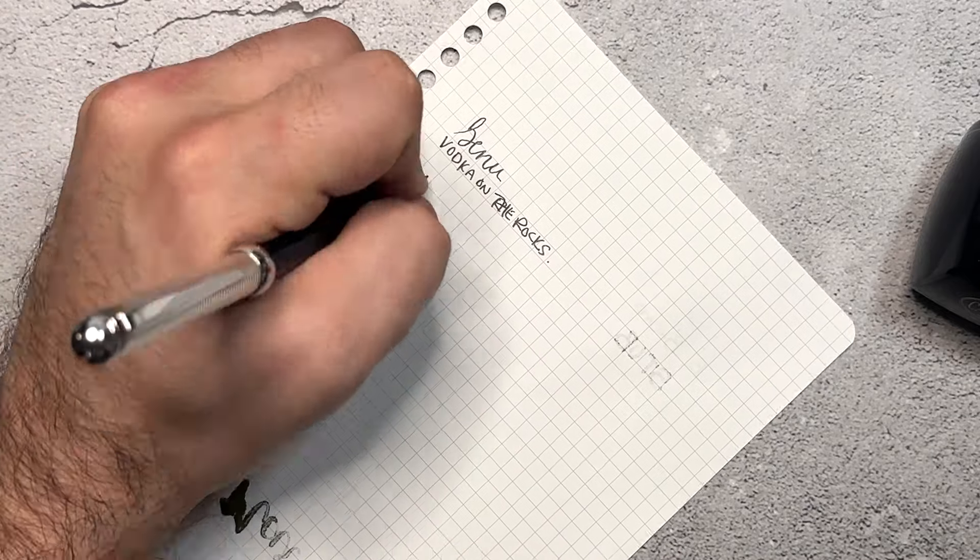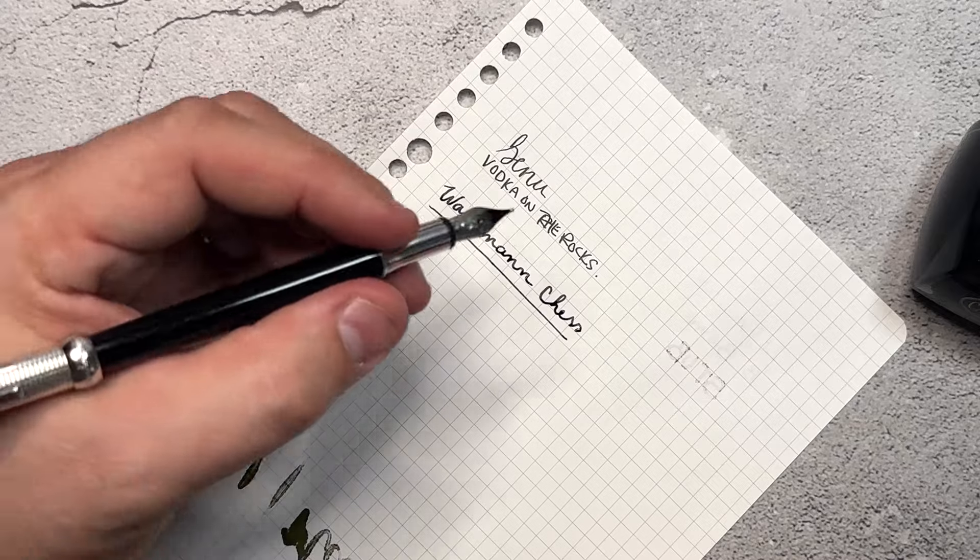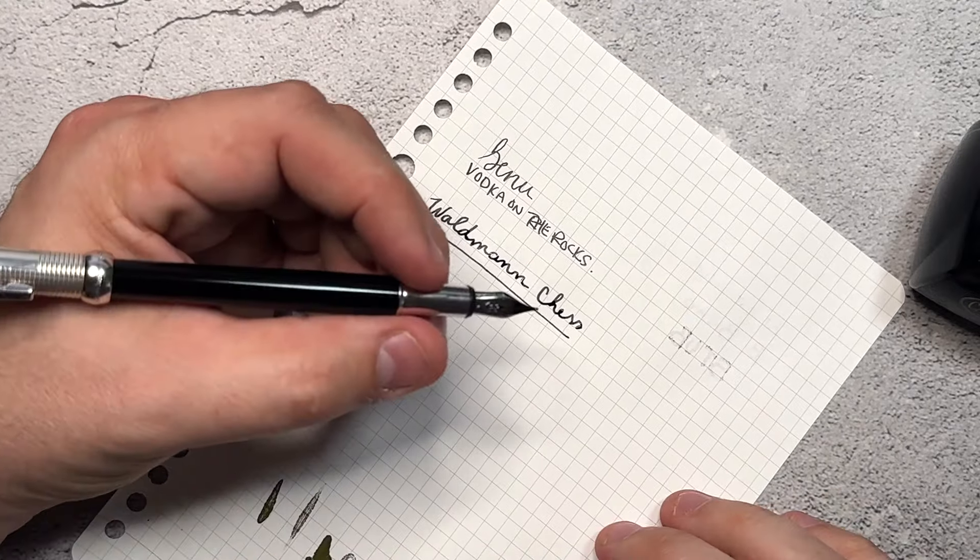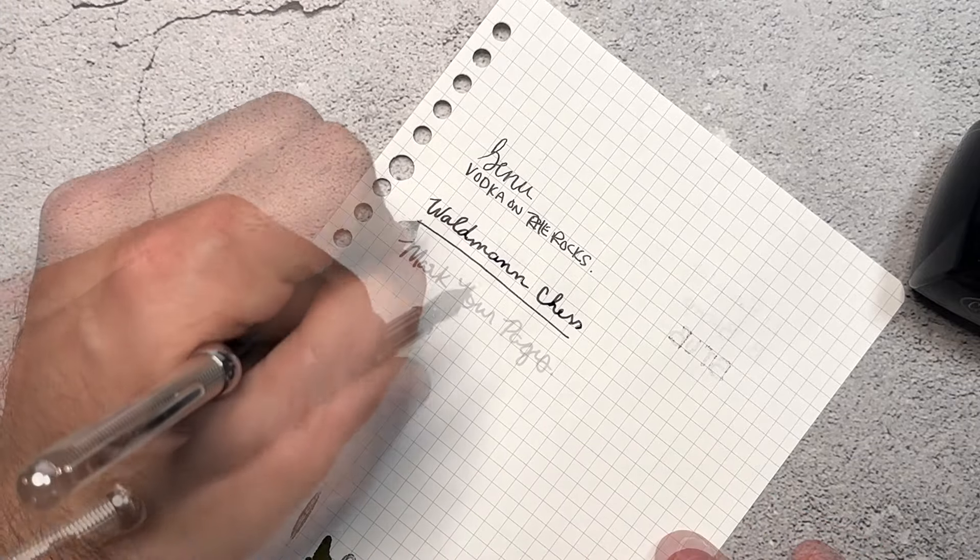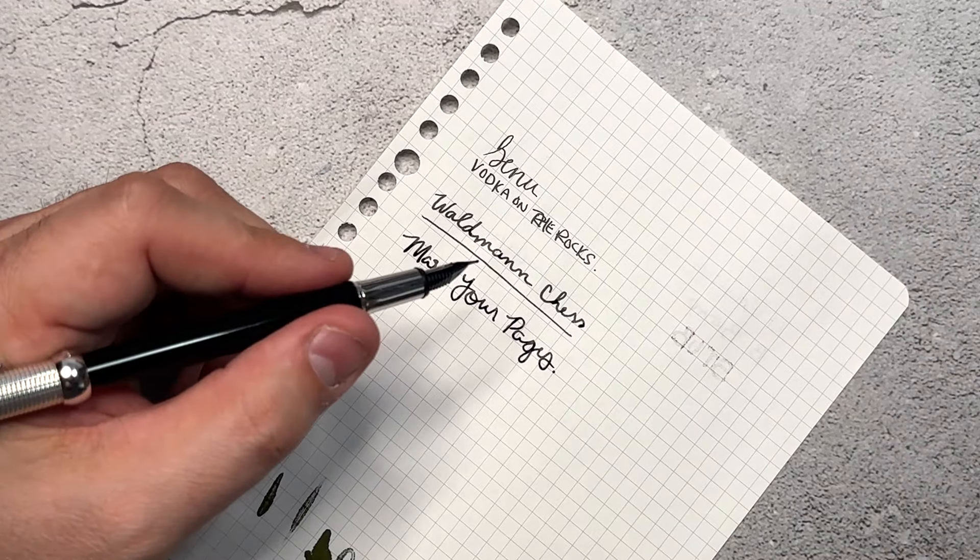I mean the pen itself it feels almost like you're writing with a pencil. That's just how thin it is. I'm really feeling this medium nib on this. I think it's this idea that it's a nice thin pen yet it's writing nice and bold on here. Feels really good. It's gliding right across the page. This is not scratchy at all. This is smooth as butter.